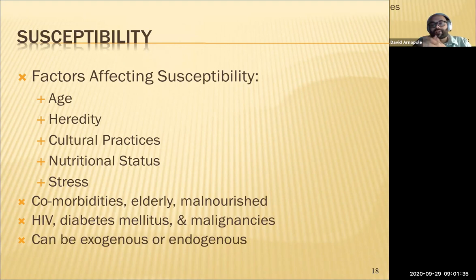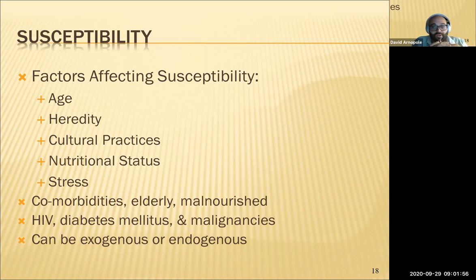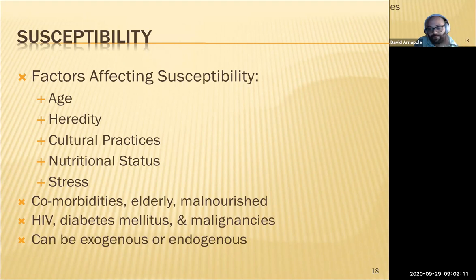Comorbidities significantly affect susceptibility. Diabetes affects disease processes by impacting immune function and blood supply to certain areas. If patients aren't eating enough protein — especially the elderly — they have a harder time making what they need to defend themselves. HIV knocks out T cells, removing the ability to fight infections. Environmental factors like homelessness or another endogenous disease process also affect susceptibility.